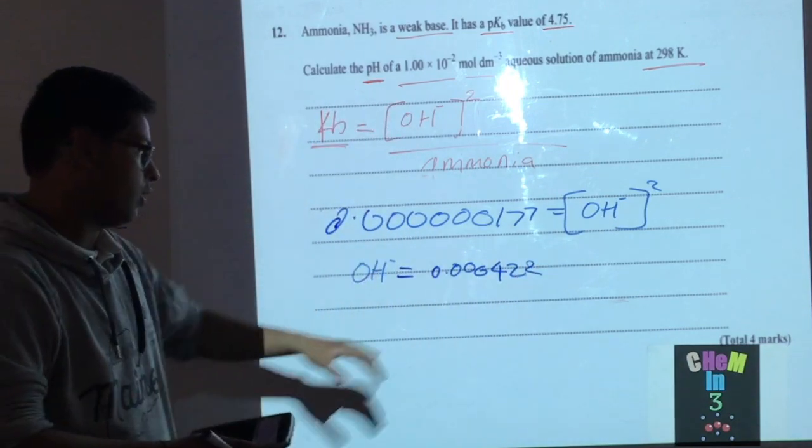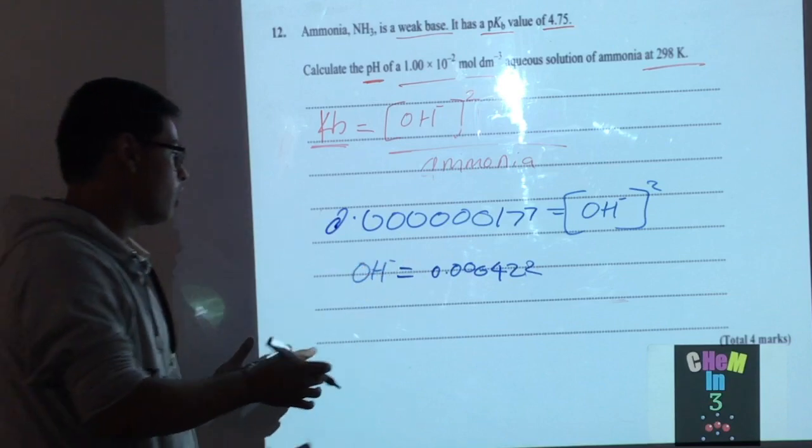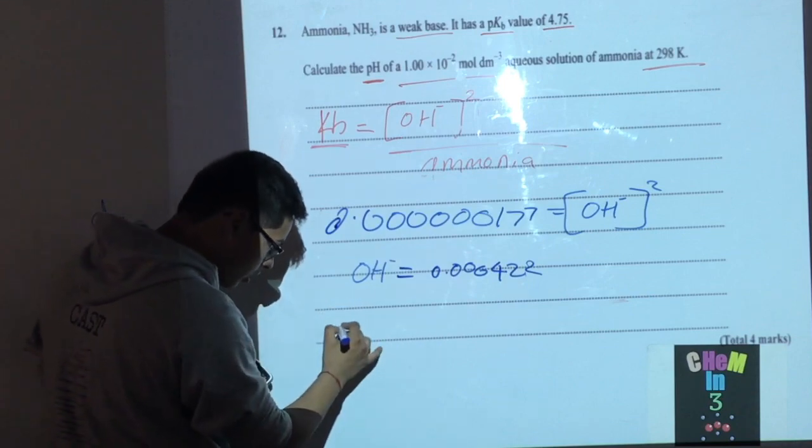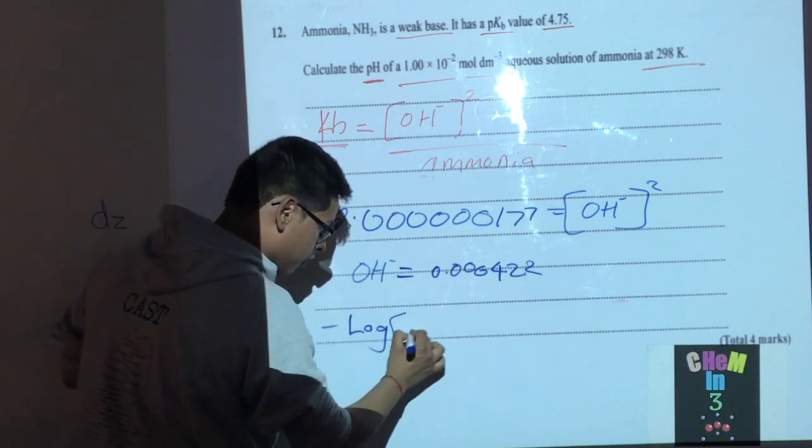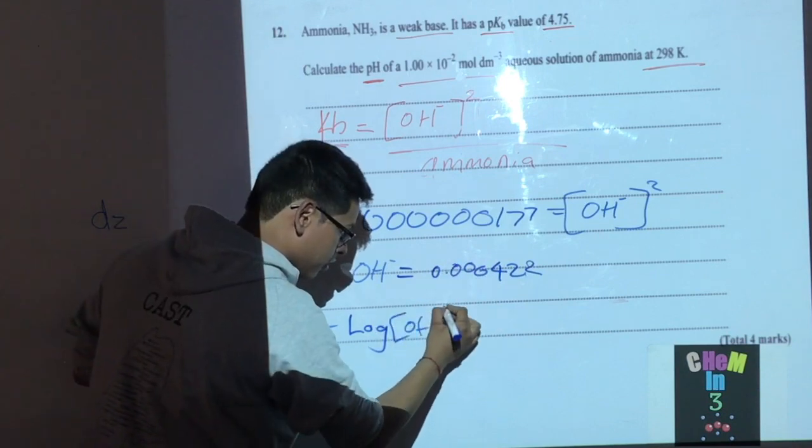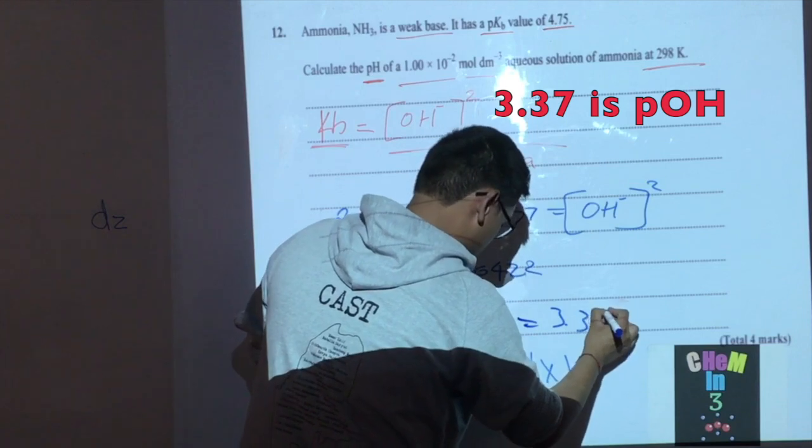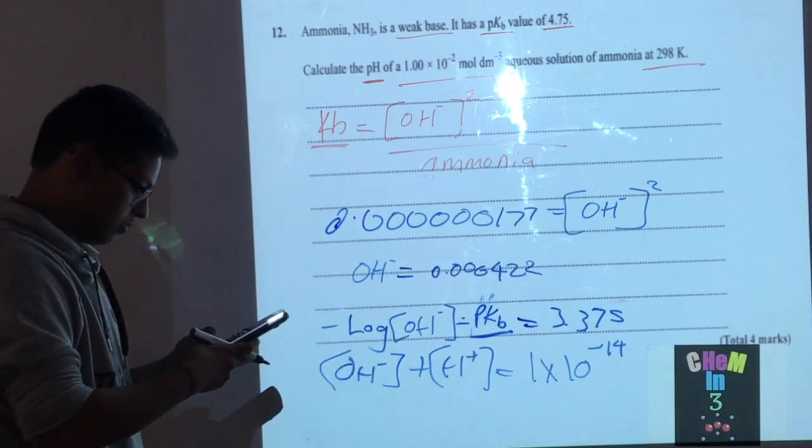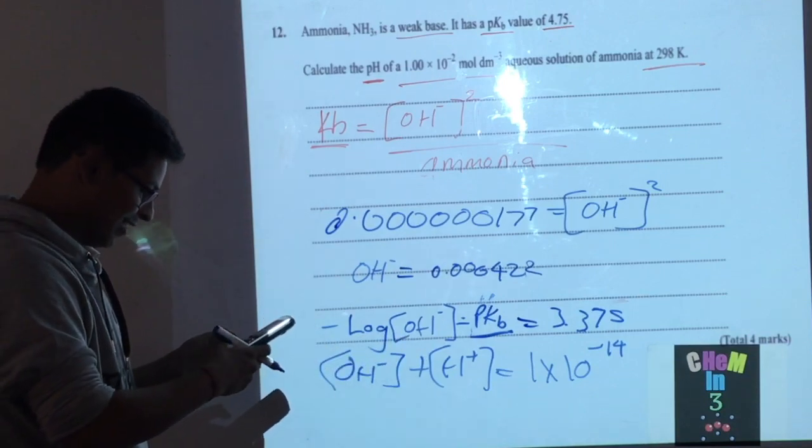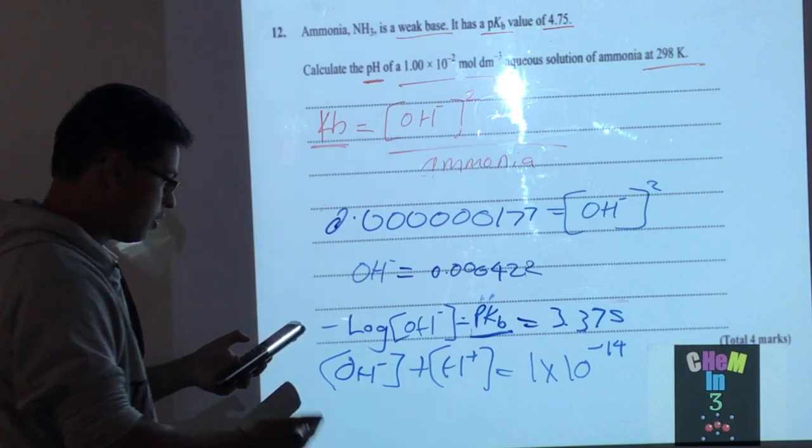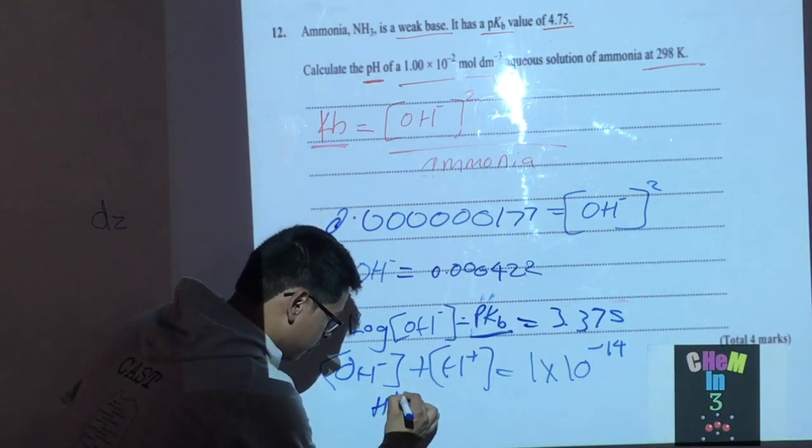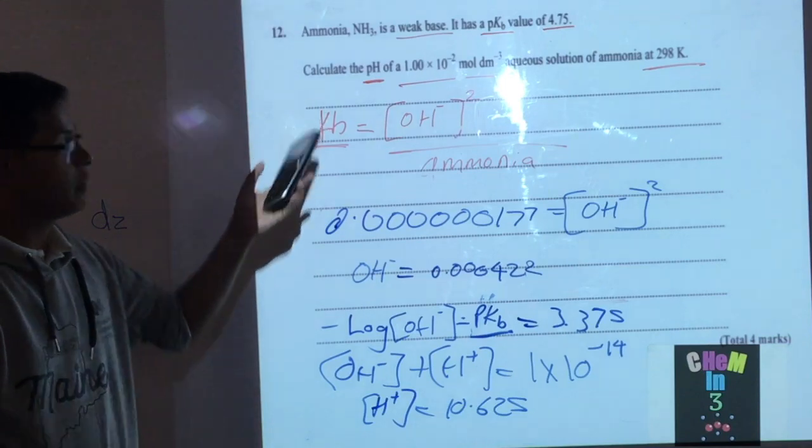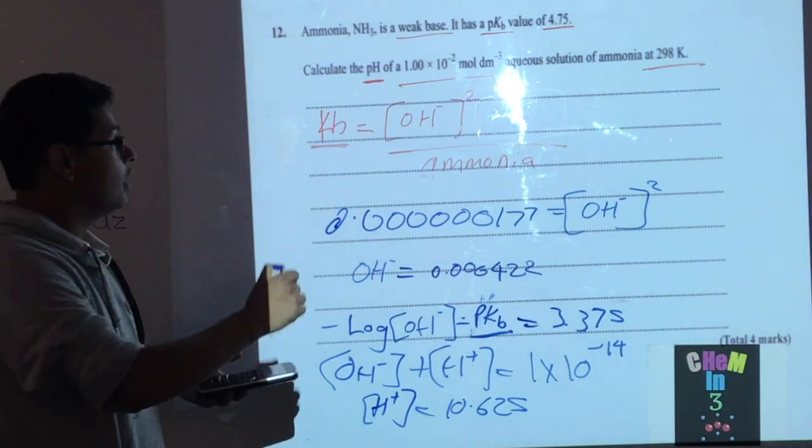Following this, we use the equation negative log of the OH⁻ concentration. This comes to 3.375, and then we do 14 minus this value. So 14 minus 3.375 gives us 10.625, which would be the pH of ammonia at this concentration.